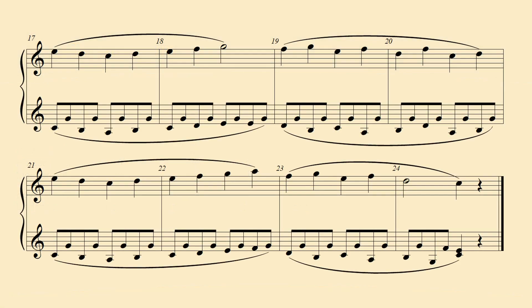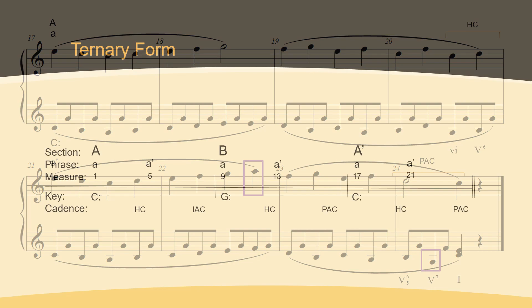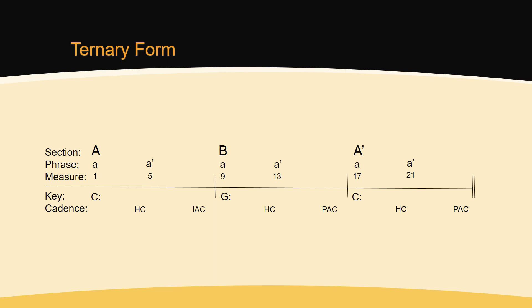The A section returns with a direct modulation back to the home key of C major. It is an almost exact restatement of the opening section, with only a slight change of replacing the half note G in measure 6 with a continued ascent to A in measure 22, and an alteration to the baseline in measure 24 to create a perfect authentic cadence. The return of the A section is a complete restatement. Each section is a parallel interrupted period. The B section contrasts with the A section because of the modulation to the dominant.